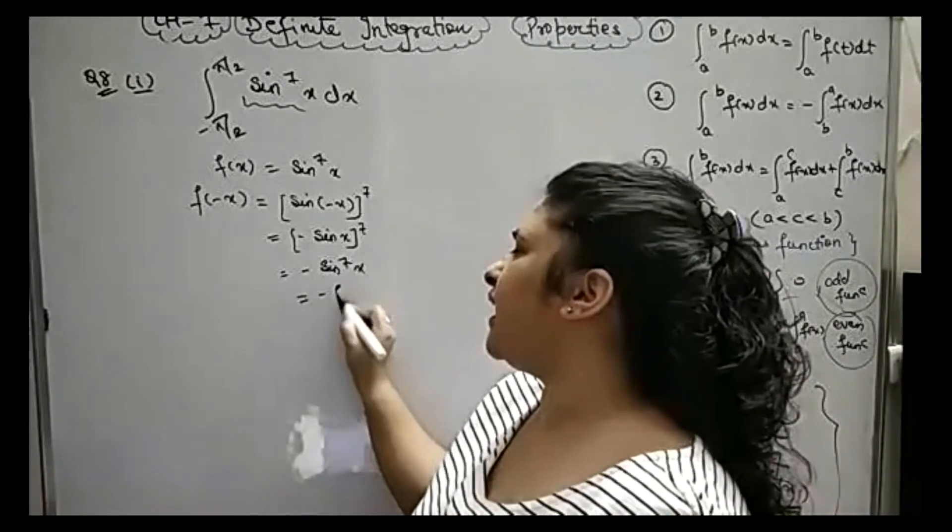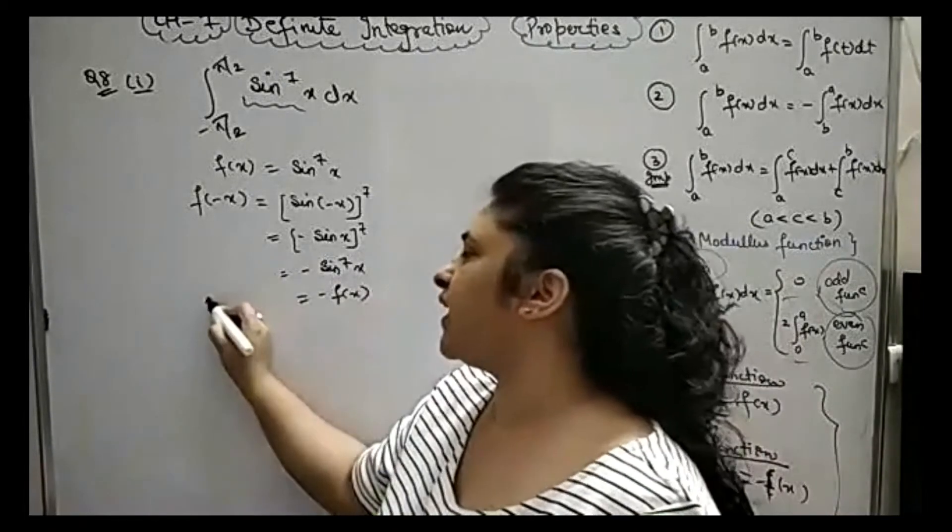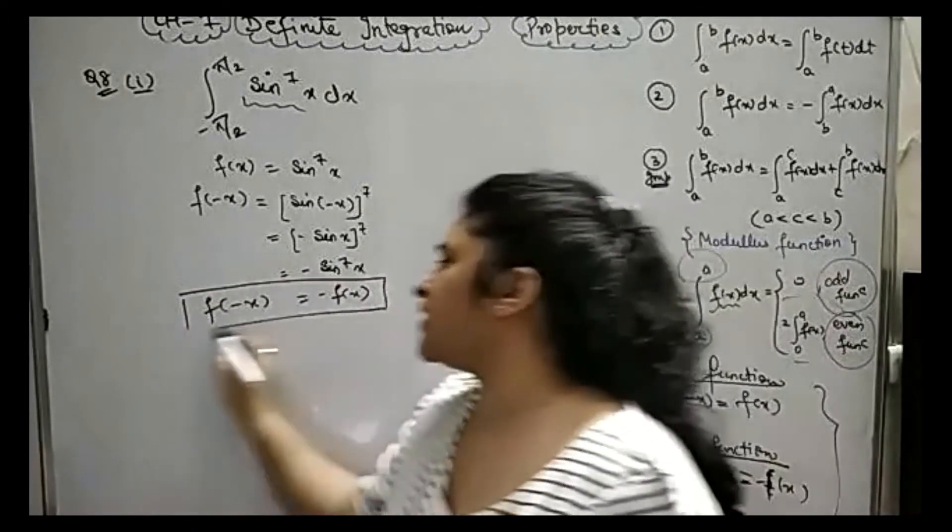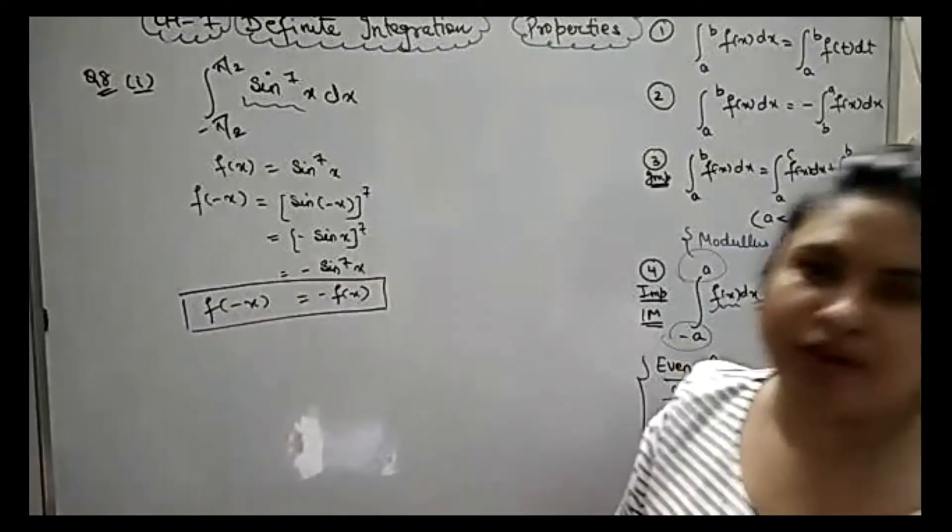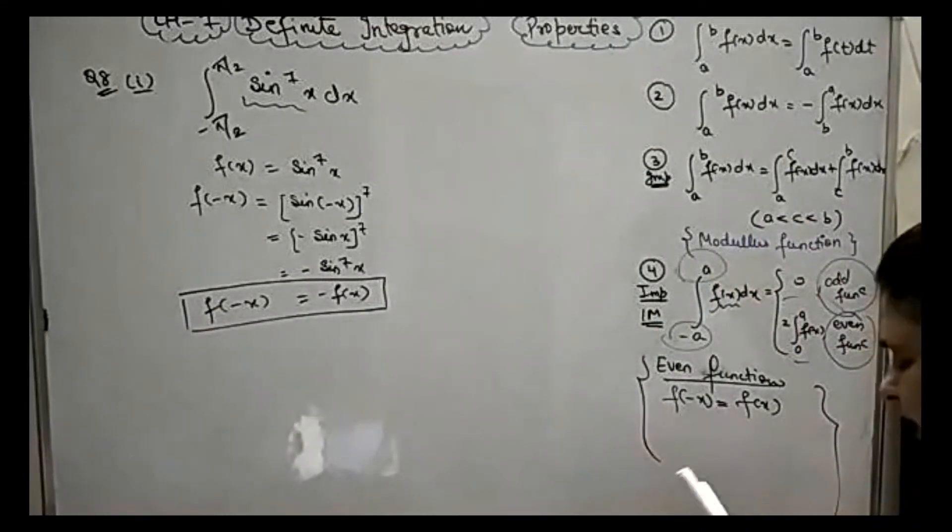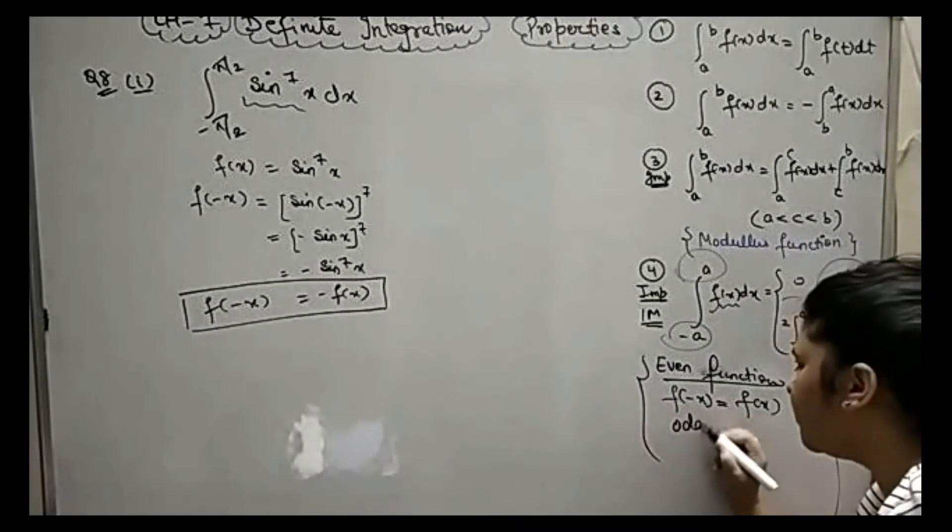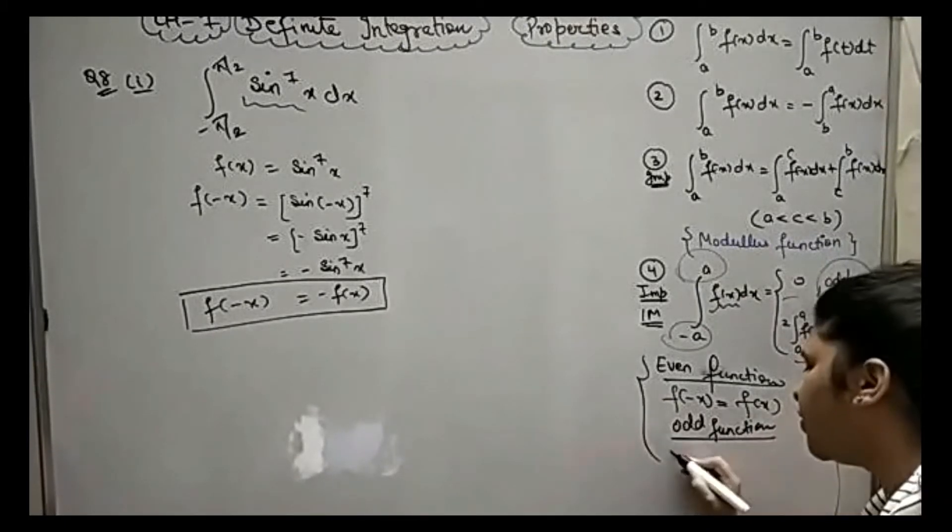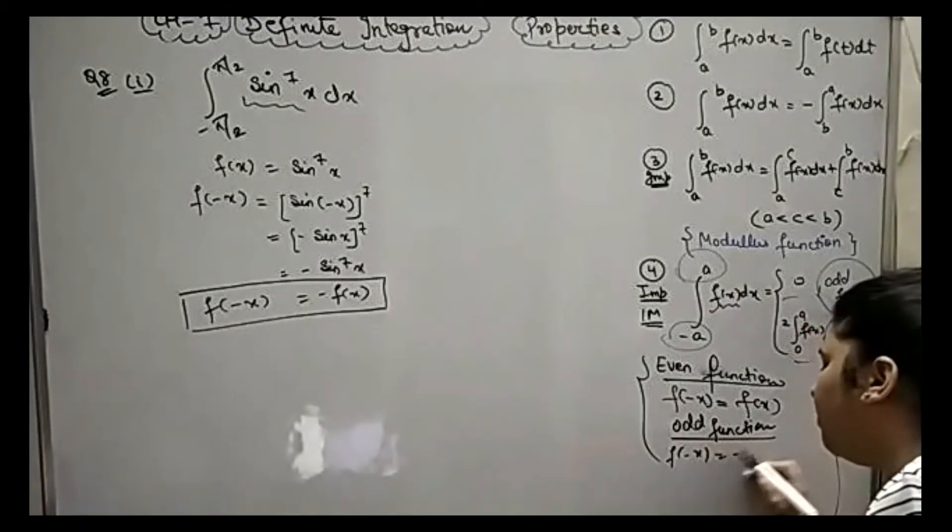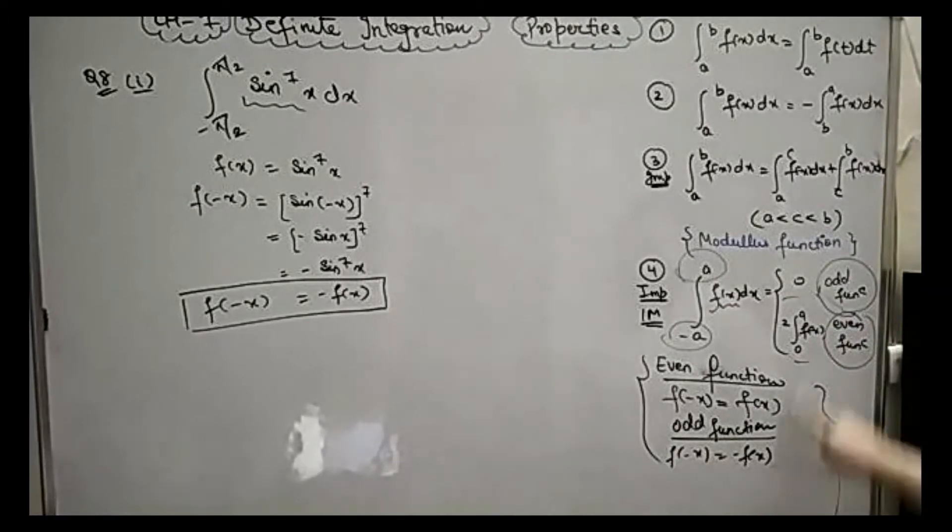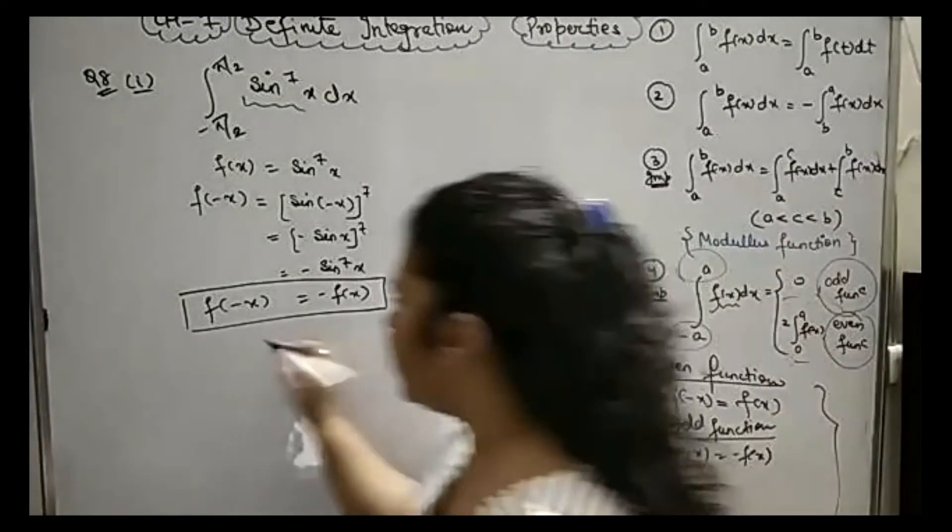Now, you will see that f of minus x equals minus f of x. And when f of minus x equals minus f of x, that means it is an odd function. If it is an odd function, what is the answer? Zero.